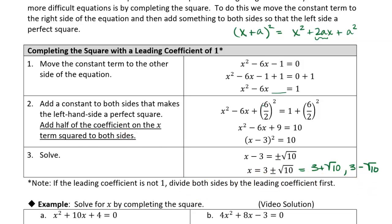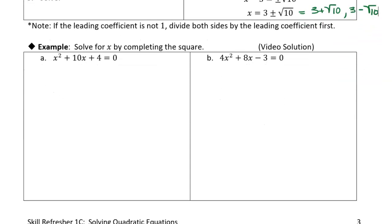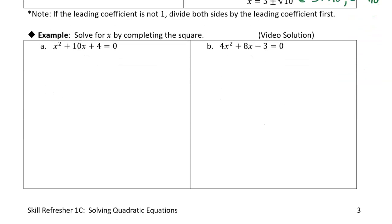Let's practice that. We're going to complete the square. The first step is to move the constant term to the other side. So we get x squared plus 10x equals negative 4, leaving a space. Then we need to add something to both sides that makes the left side a perfect square. We take half of 10 and square it: half of 10 is 5, and 5 squared is 25. But we have to add 25 to both sides so the equation stays true.